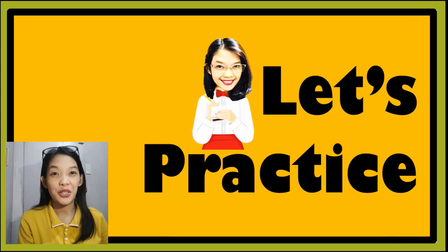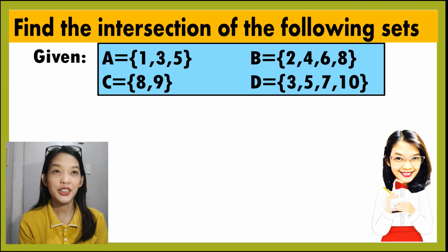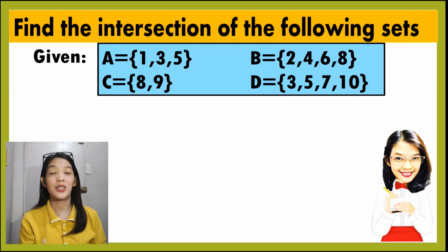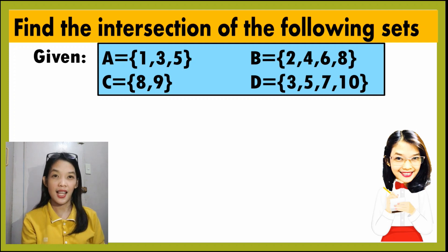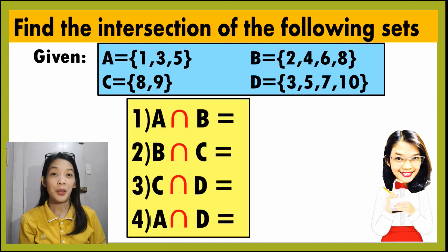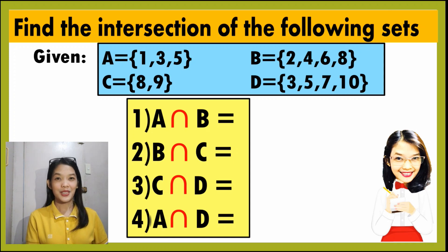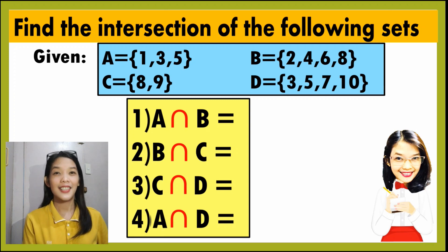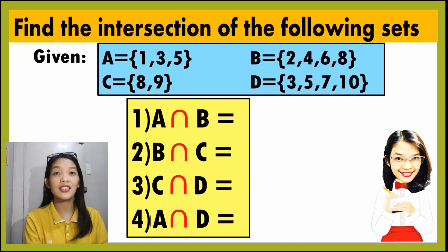Let's practice. You can pause the video and try to answer this. Find the intersection of the following sets. Set A has the elements 1, 3, 5. Set B has the elements 2, 4, 6, and 8. Set C has the elements 8 and 9. And set D has the elements 3, 5, 7, and 10. Find: number 1, the intersection of A and B; number 2, the intersection of B and C; number 3, the intersection of C and D; and number 4, the intersection of A and D. Remember that you need to find the common elements.